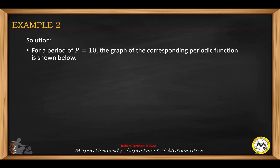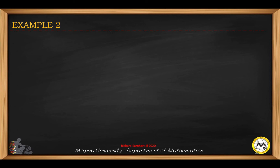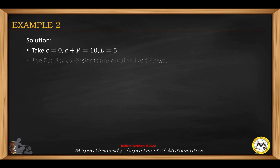For a period of p equals 10, the corresponding periodic function is shown below. The function is 4x from x equals 0 to x equals 10, which is a diagonal line from 0 to 10, and we expand this periodically outside the interval with the same period of 10. Since the limit is not in the negative l to l form, we take the limits from c to c plus b, so c equals 0 and c plus b equals 10. Since l is half of the period, l should be 5.